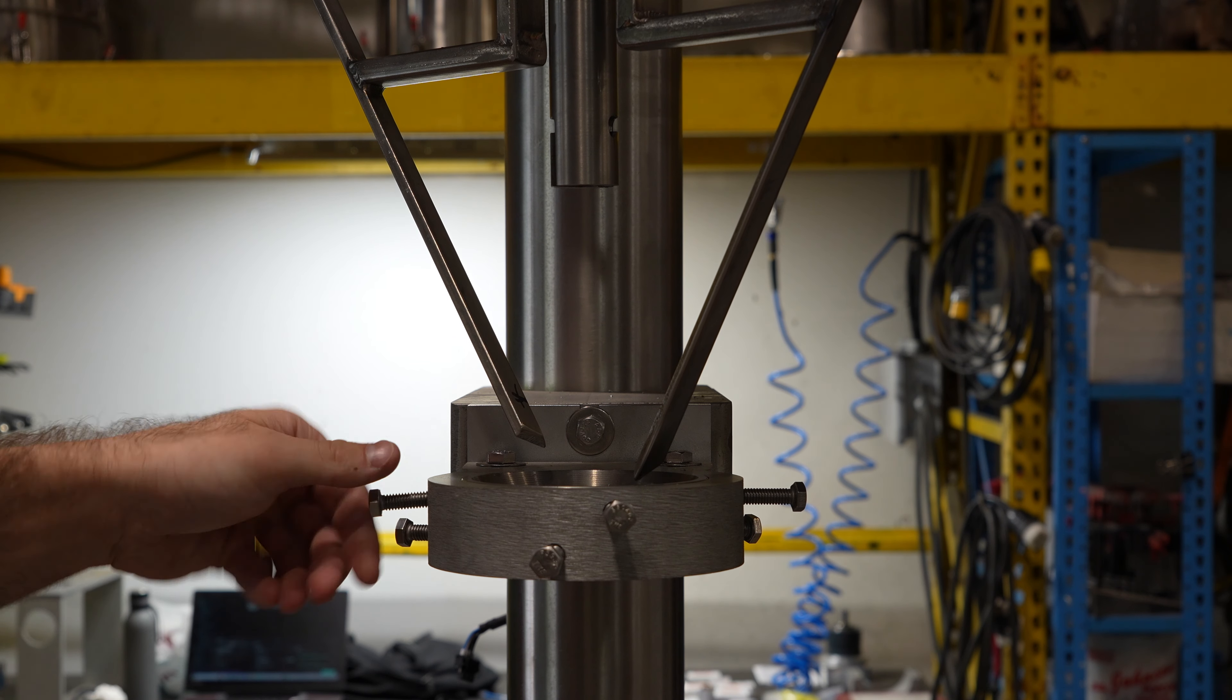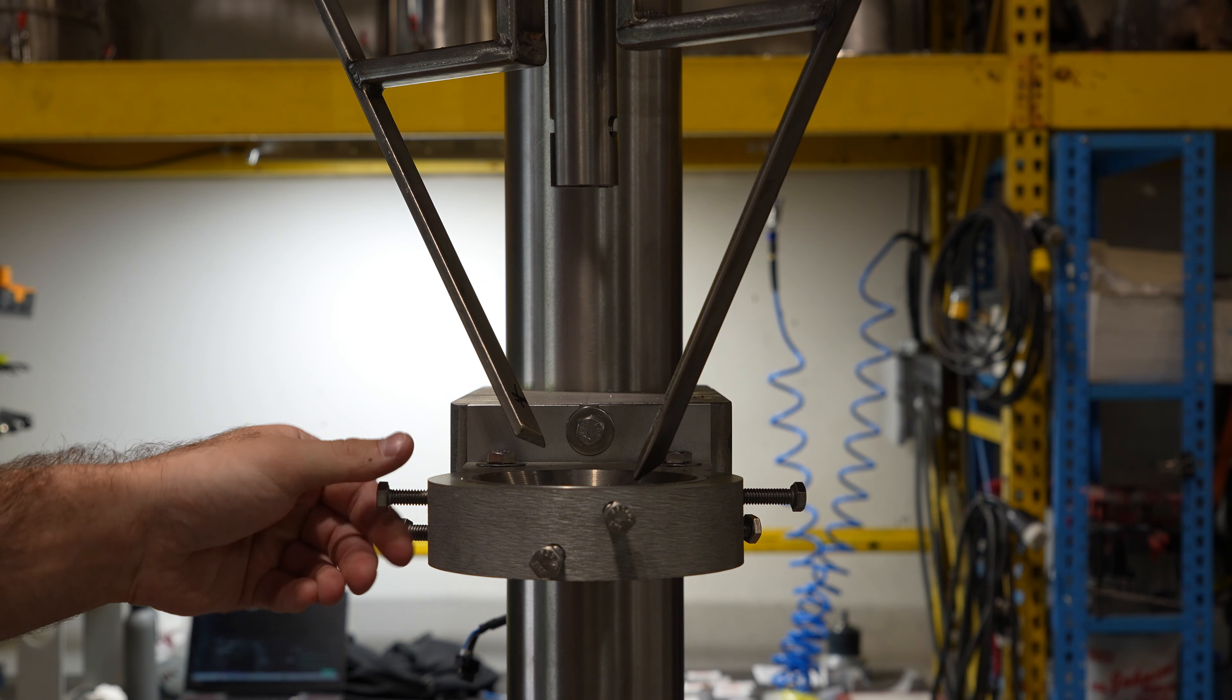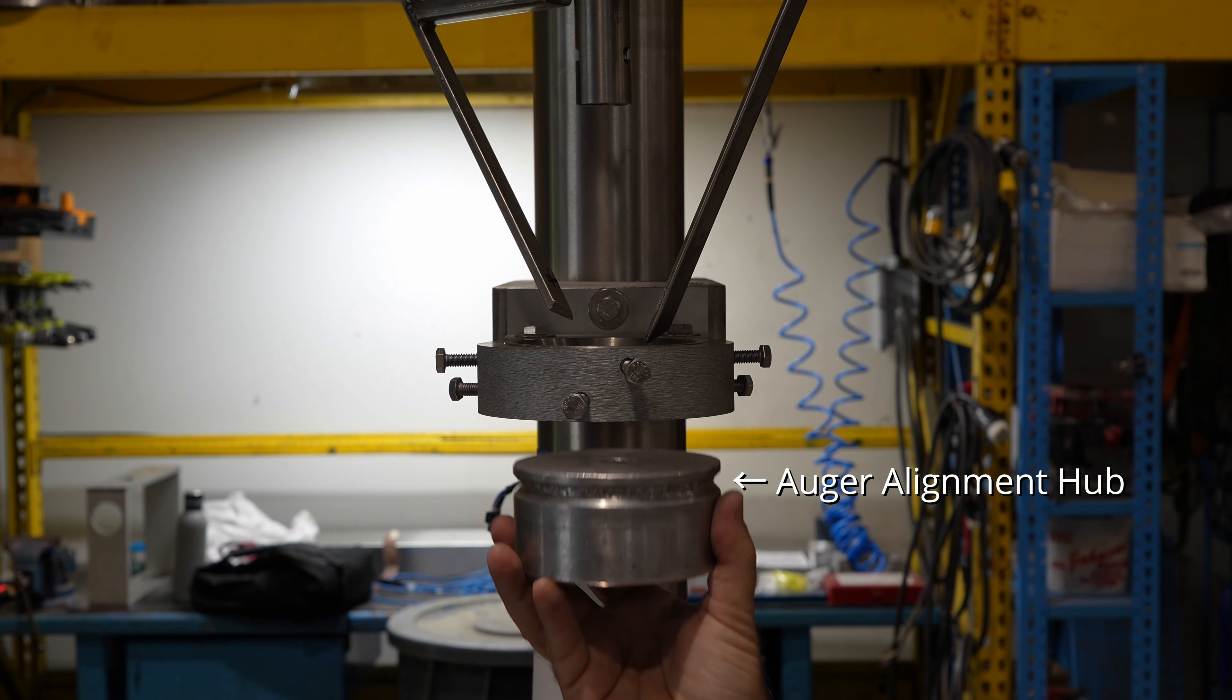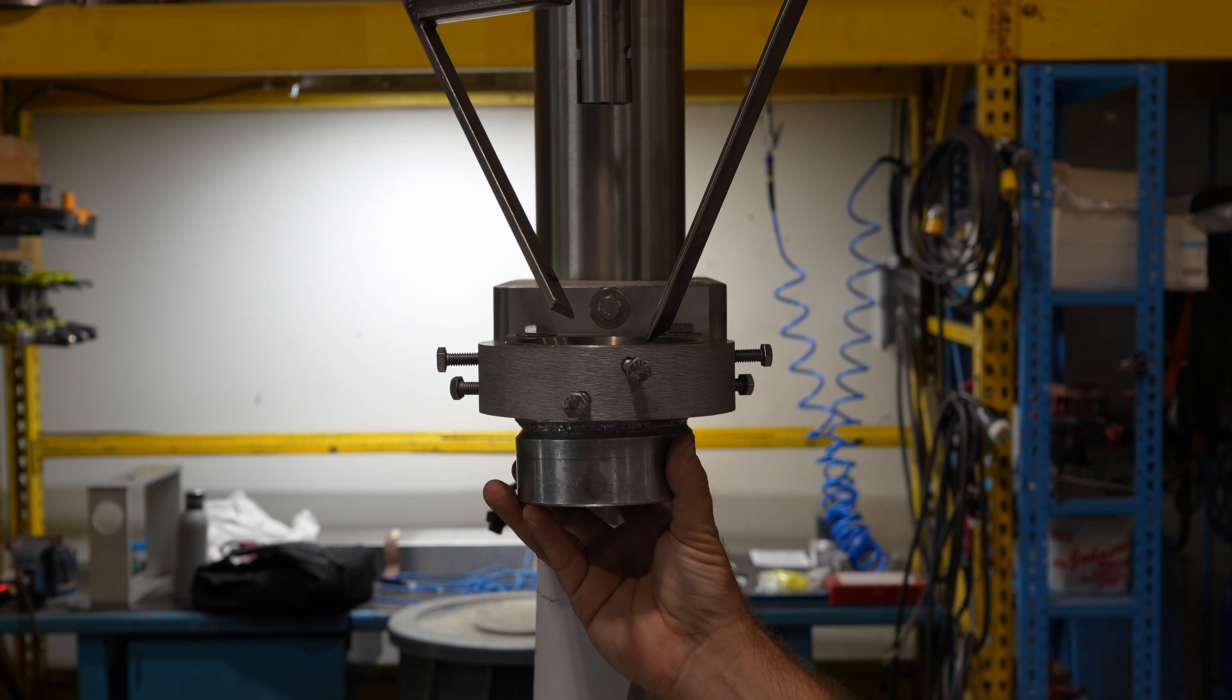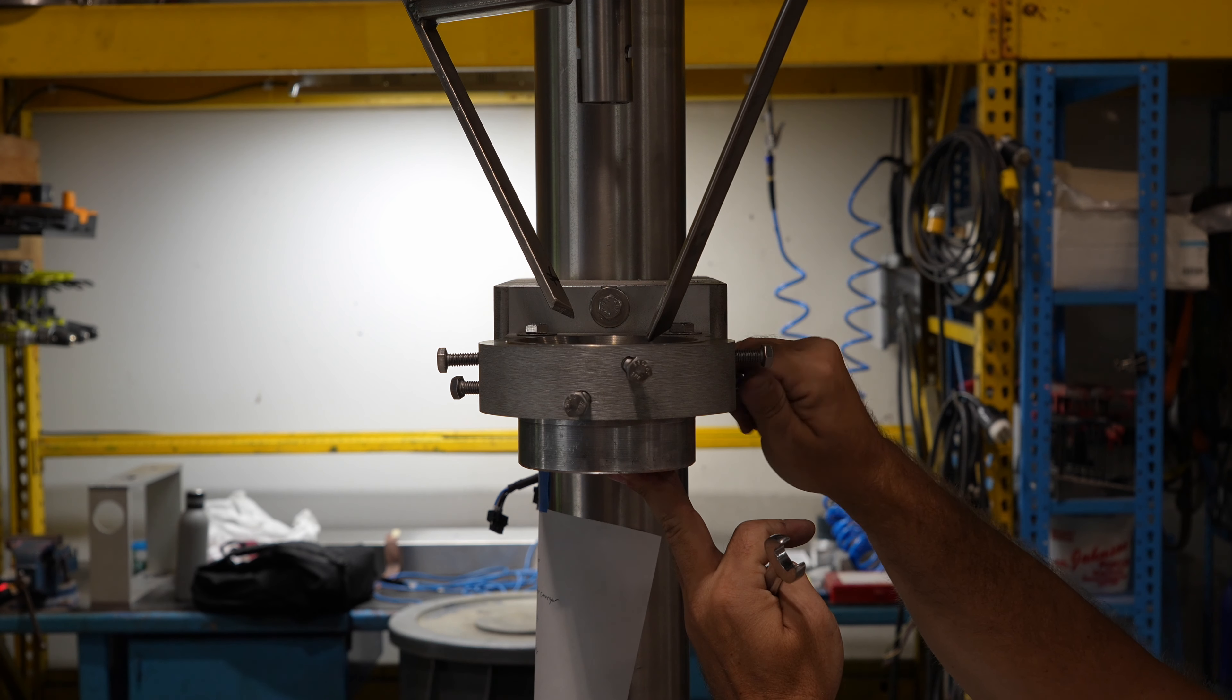For easier auger adjustments, just consider buying a hopper ring from the parts section of our website. First we're going to fit the auger alignment hub into the bottom of the funnel and hopper coupling.